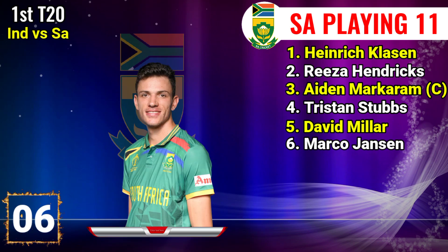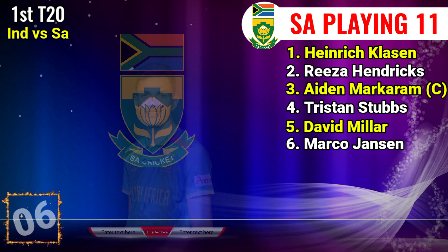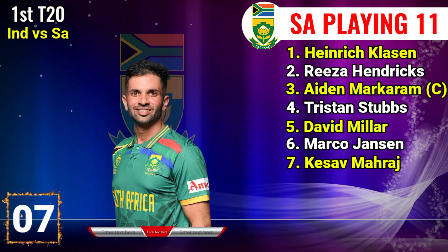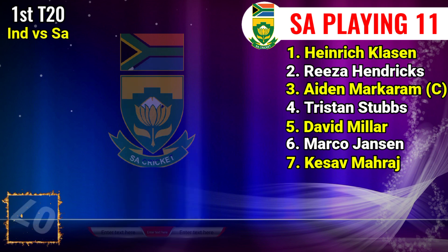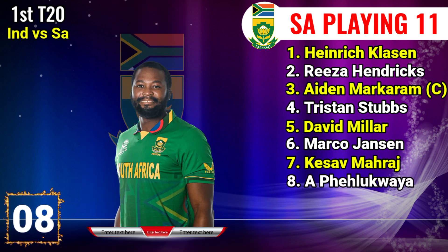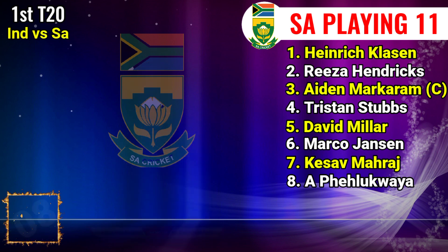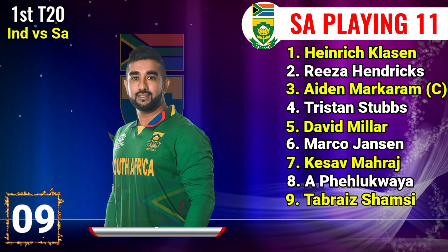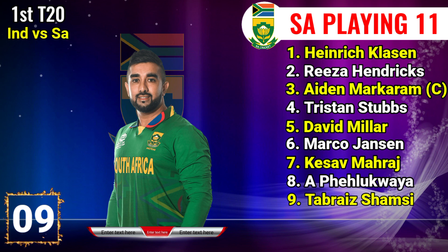Number 6 Marco Janssen, Left Arm All-Rounder. Number 7 Keshav Maharaj, Right Hand All-Rounder. Number 8 Andrew Filiquia, Right Hand Fast Bowler. Number 9 Tabre Samsi, Left Arm Spinner.